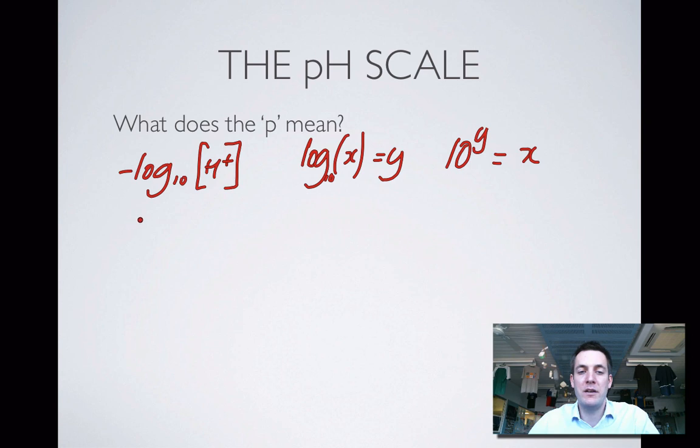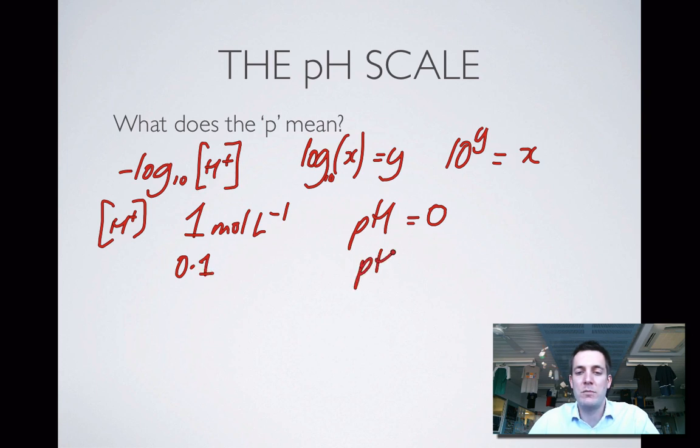What would be useful to know would be that if I've got an H plus ion concentration of 1 mole per liter, then log of 1 is 0, and minus 0 is 0, so the pH is equal to 0. If my H plus ion concentration is 0.1, then 10 to the minus 1 is 0.1, so the pH is minus minus 1, which is 1. And 0.01 gives me a pH of 2. So notice that the higher the pH is, the less H plus ions there are in solution, or in other words, the lower the concentration of them is.